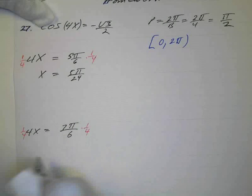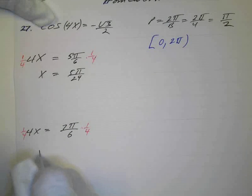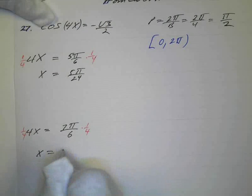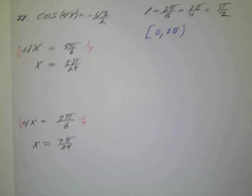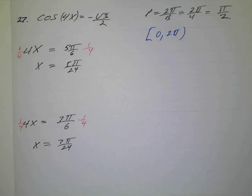And then if we do the same thing over here, we're going to end up with x equals 7π over 24. Okay? So those are my basic solutions, my first two.